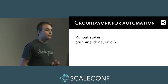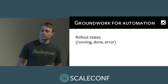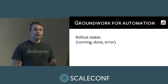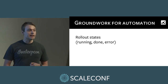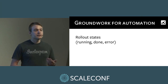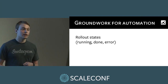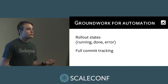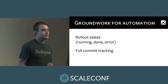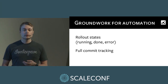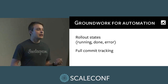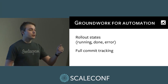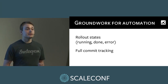Then we added groundwork for the automation. First, adding states to the rollout — so far it was simply a log of what had happened. This added states: initially a rollout is in 'running' state while in progress; if successful it goes to 'done'; if failed, to 'error'. This meant we actually knew the result of the previous rollout. Then we added full commit tracking — instead of only knowing the latest commit that passed tests, a post-commit hook uploaded metadata for every commit to Soron, and Jenkins reported the test run status against each specific commit. So we now knew all commits in master waiting to go out and the test run status for each.